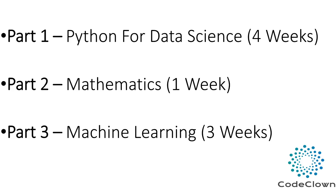Part 1 consists of Python for data science and covers the first 4 weeks, starting with Python and going into data Python for data analysis. Part 2 is 1 week dedicated to mathematics — probability and statistics with hypothesis testing, distributions, and other methods. You may skip Part 2 if you already have basic knowledge of mathematics. Part 3 covers machine learning algorithms with a brief introduction and practical implementation of all of them.